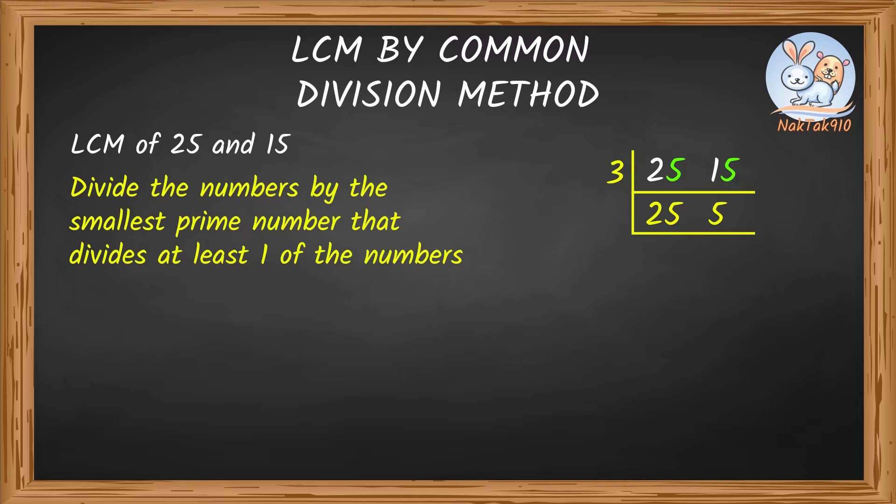We continue dividing like this until at least one of the quotients is 1. Which number do you think we can use next? Just looking at the numbers makes me want to go with 5. 5 times 5 is 25. 5 times 1 is 5. Let's write that down.